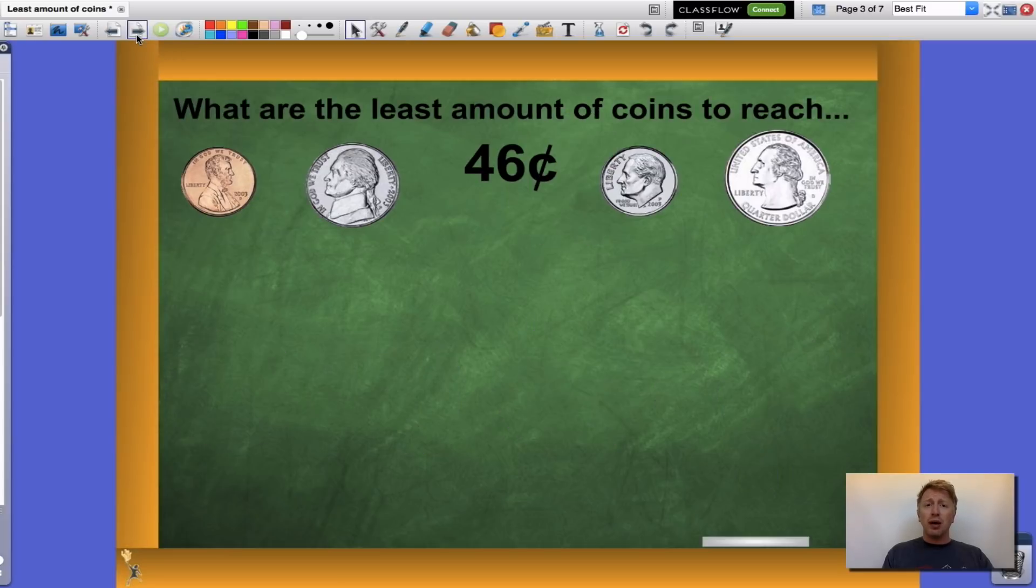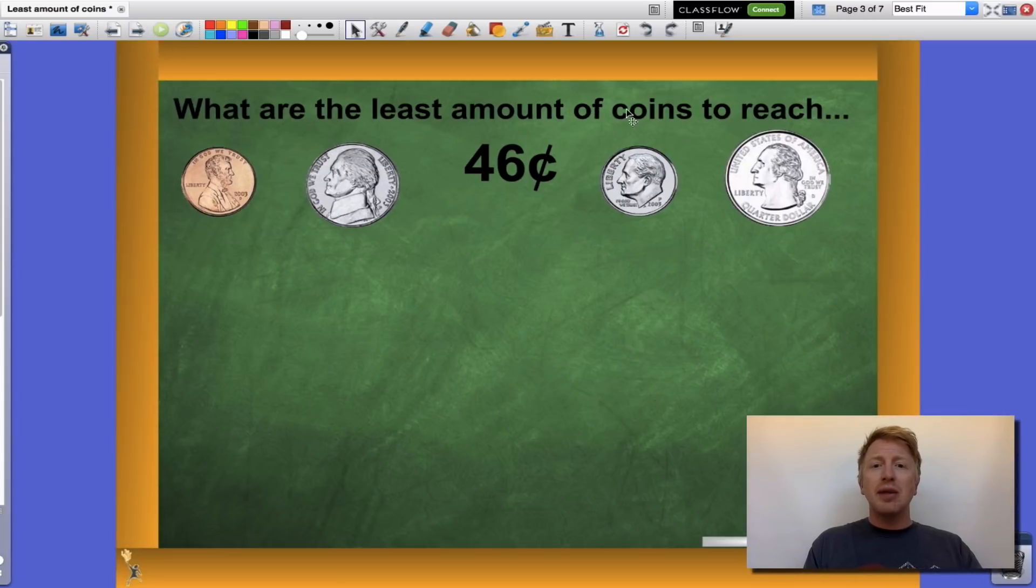So let's start by looking at our first problem. What are the least amount of coins I can use to reach forty-six cents? I have a penny, a nickel, a dime, and a quarter. So how do I do this? The way that I like to do it is I like to start with my largest coin value and work my way down.